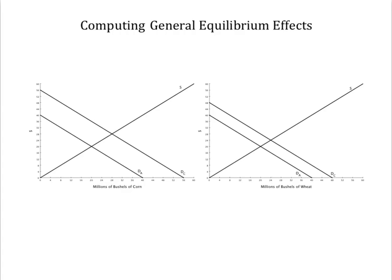Conceptually, the idea is that the effect of shifting out the demand in, say, the market for corn, so that the price of corn rises, will cause the price to rise in markets for substitutes, like wheat, which in turn will further increase the price for corn.